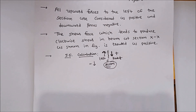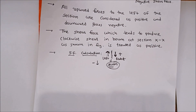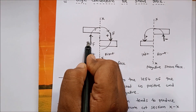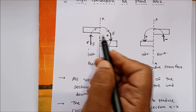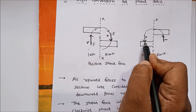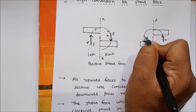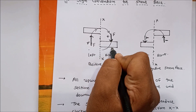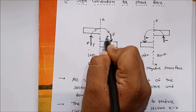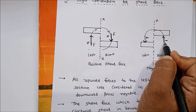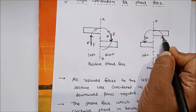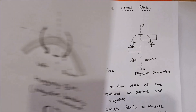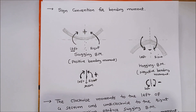So the sign convention for shear force: all upward forces to the left of the section are considered as positive and downward force is taken as negative. Similarly, all downward forces to the right of the section are taken as positive and upward forces are taken as negative. This is the sign convention for shear force and bending moment. Thank you.